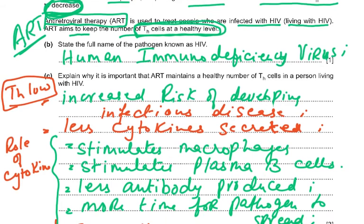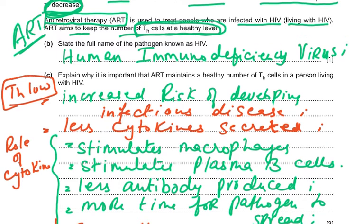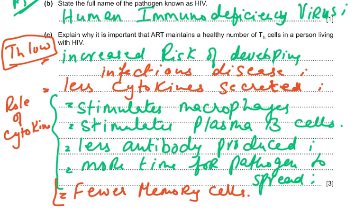The question asks why it is important that ART maintains a healthy number of helper T lymphocytes in a person living with HIV. If the number of helper T lymphocytes decreases, the person will be prone to any infection — viral pneumonia, tuberculosis, typhoid, cholera — any infectious disease. So there is an increased risk of developing infectious diseases.